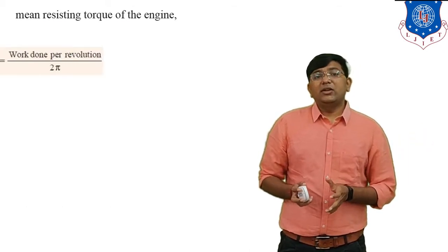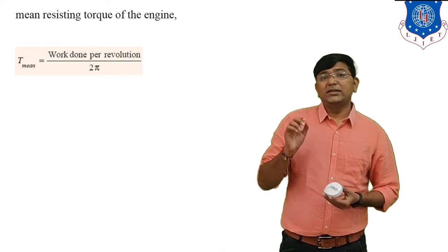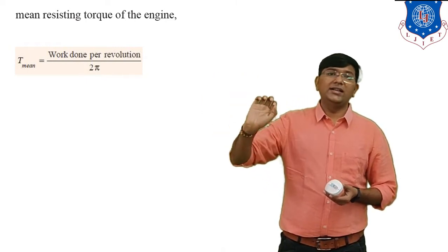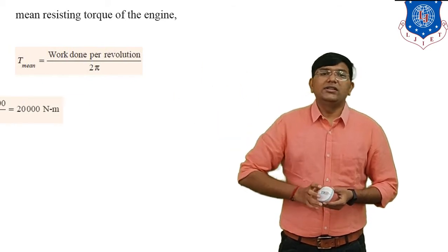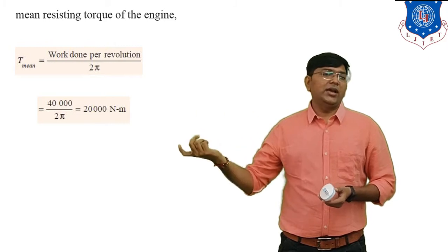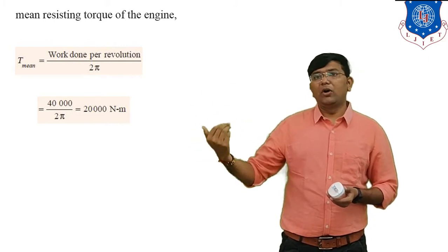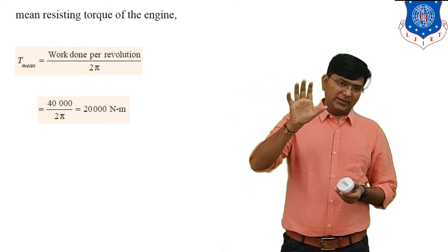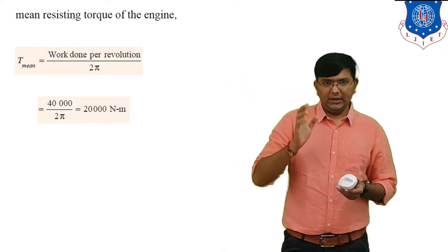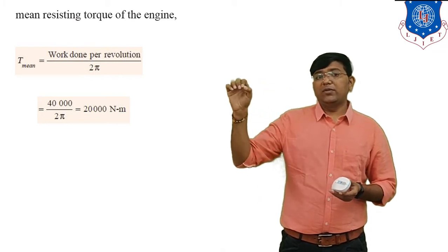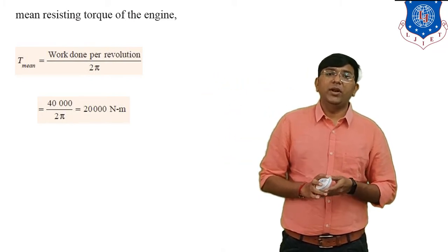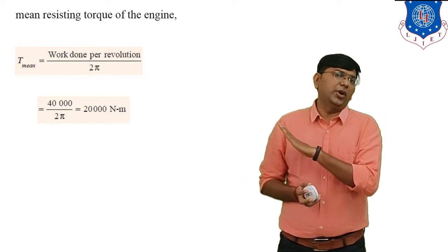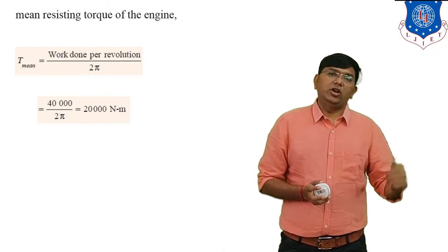Now we find the mean resisting torque. Work done equals T_mean times theta. So T_mean equals work done divided by 2π, which is 40,000π divided by 2π. Simplifying, the value of T_mean equals 20,000 Newton-meters. This is the value of the mean resisting torque.